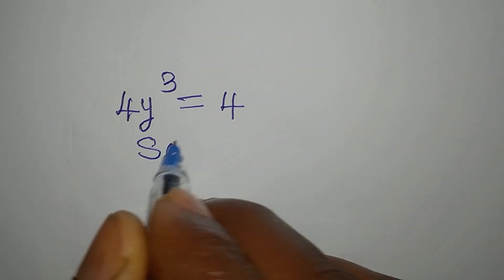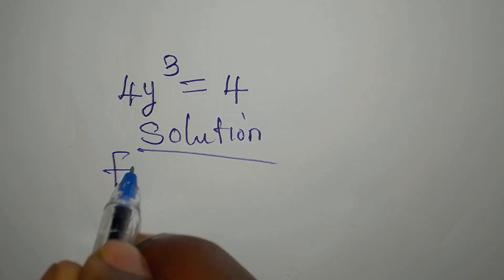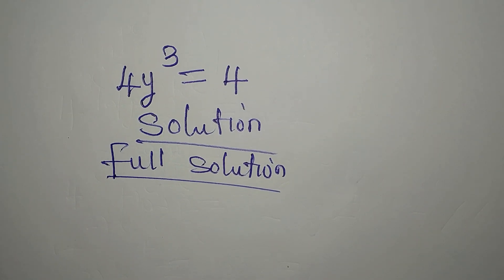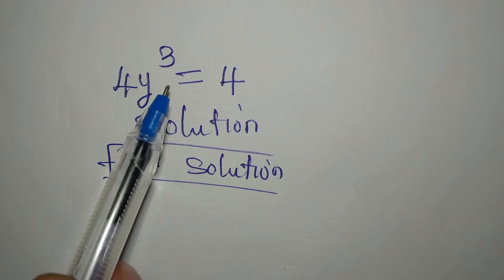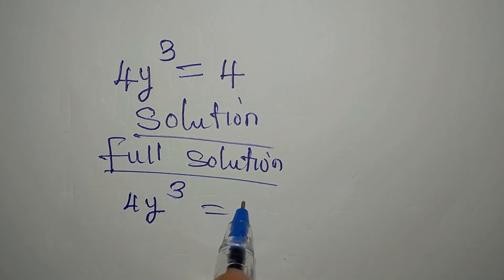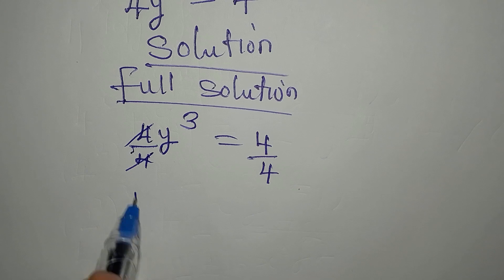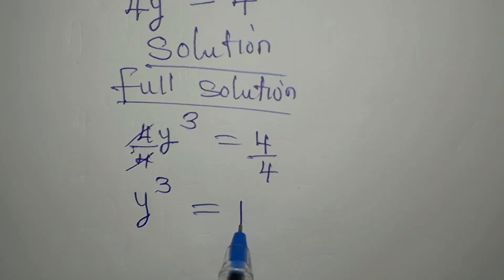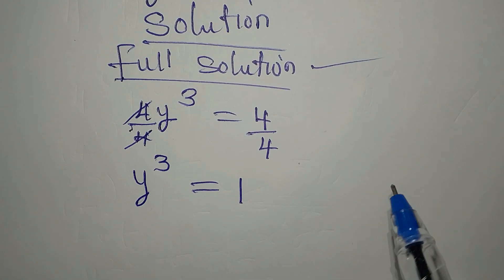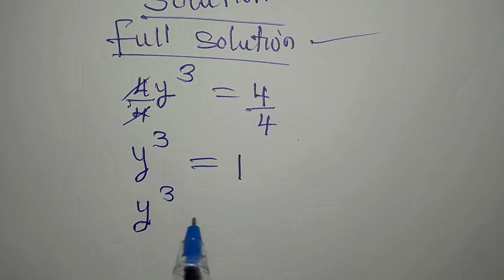Hello everyone. Let's provide the full solution to this problem. We are getting three solutions because the highest power is three. We have 4y³ = 4. If I divide directly by four, we now have y³ = 1. If you take the cube root of both sides you're going to have just one solution, but the question says we should solve it completely, having all three solutions.